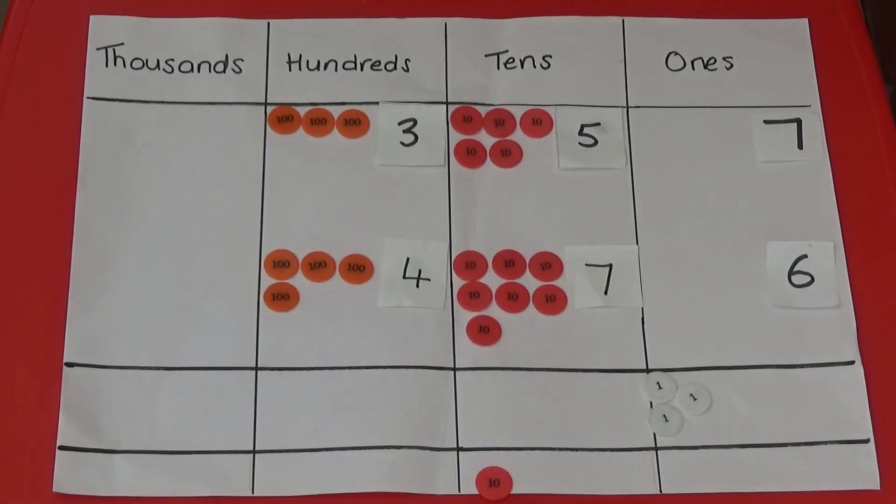I'm now going to add my 10s. 5 10s add 7 10s equals 12 10s. But I also need to add the 1 10 under the answer box. So I now have 13 10s.